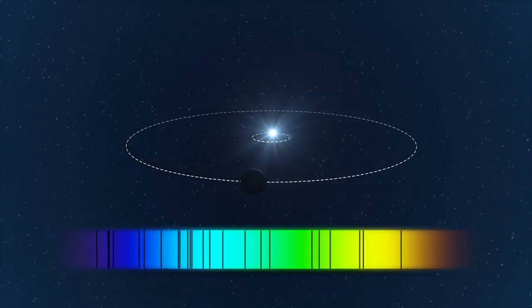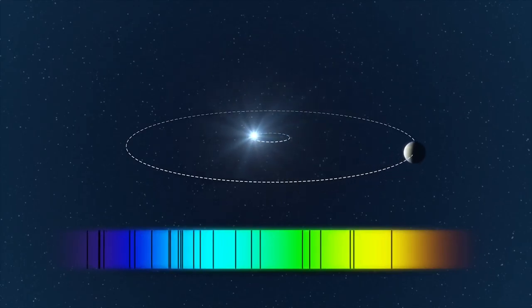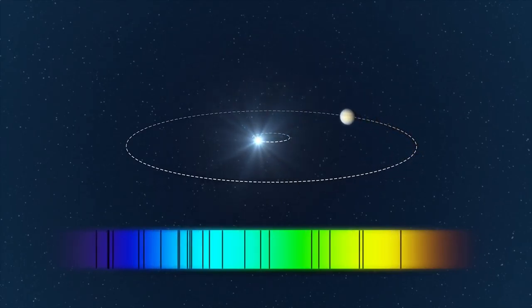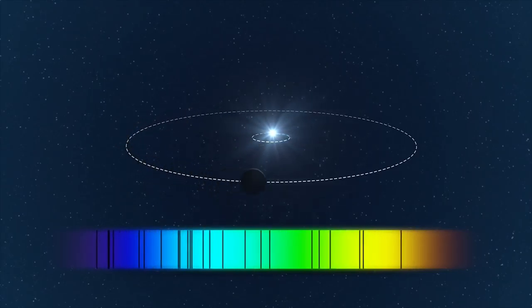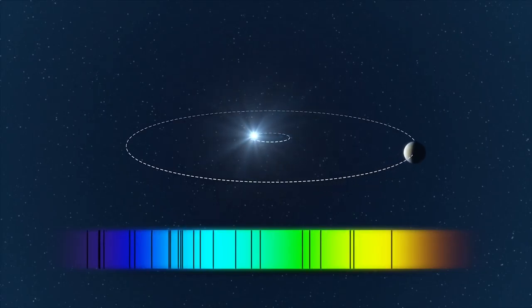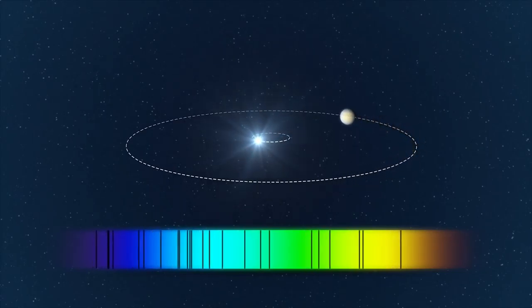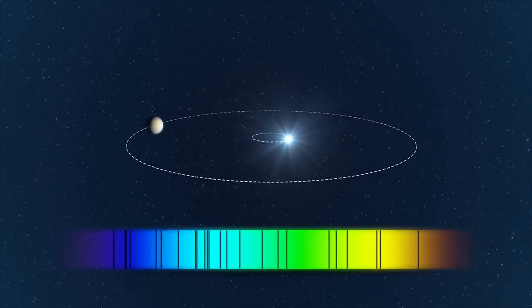The weak gravitational pull of an exoplanet in orbit causes its parent star to wobble back and forth. This tiny motion causes a small shift in the star's spectrum, which extremely sensitive spectrographs, such as ESO's HARPS, can detect through radial velocity tracking.